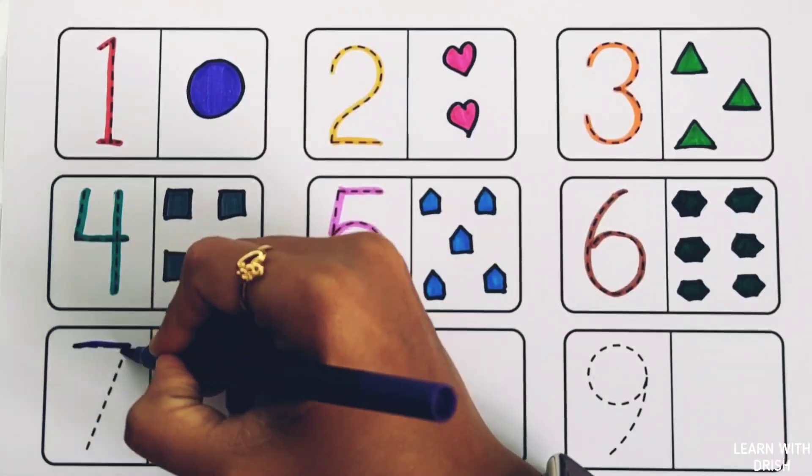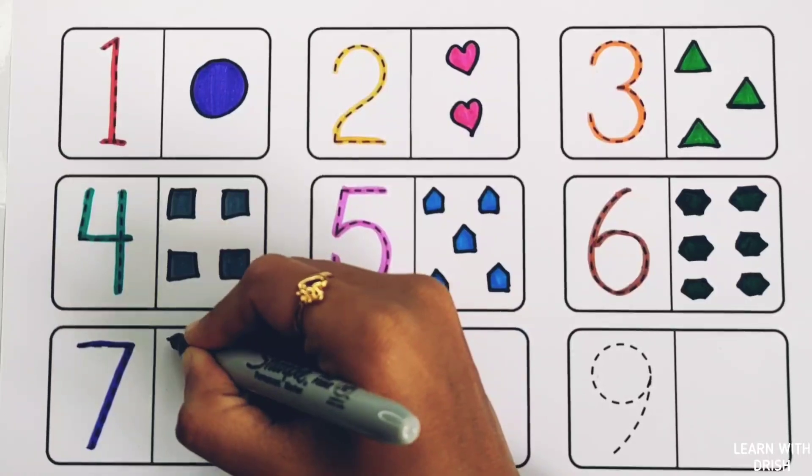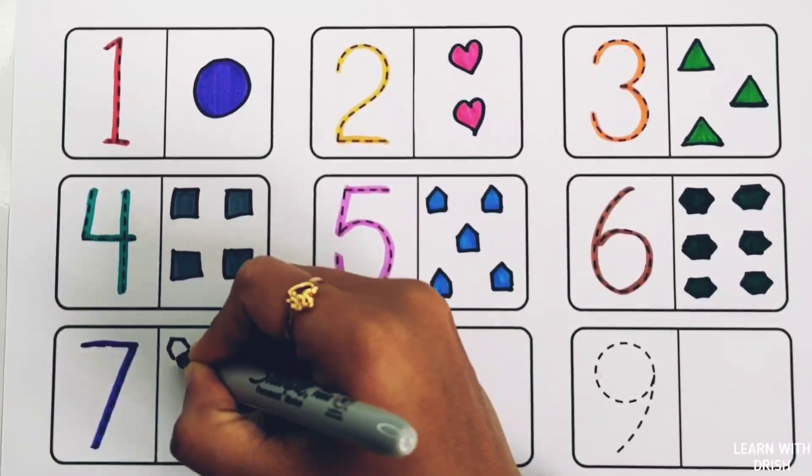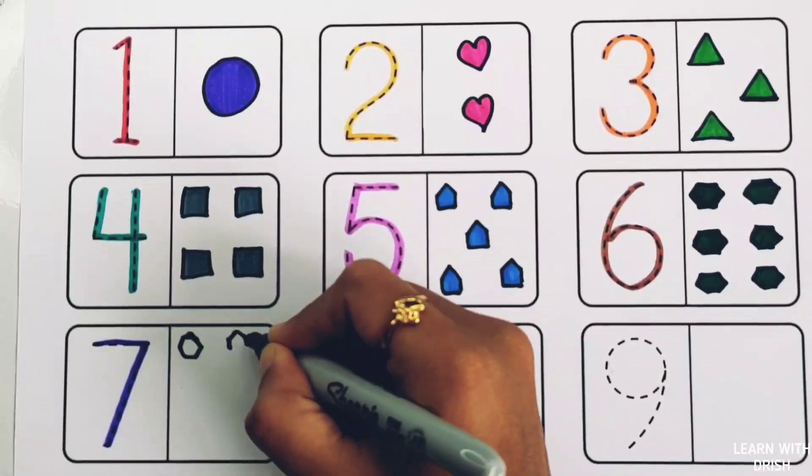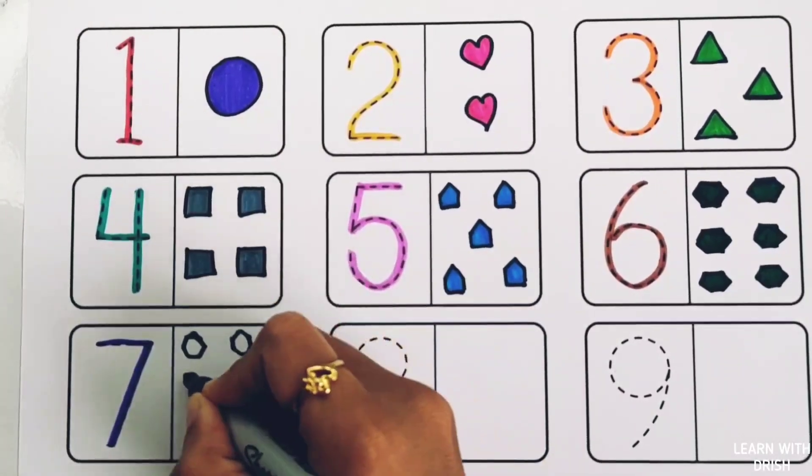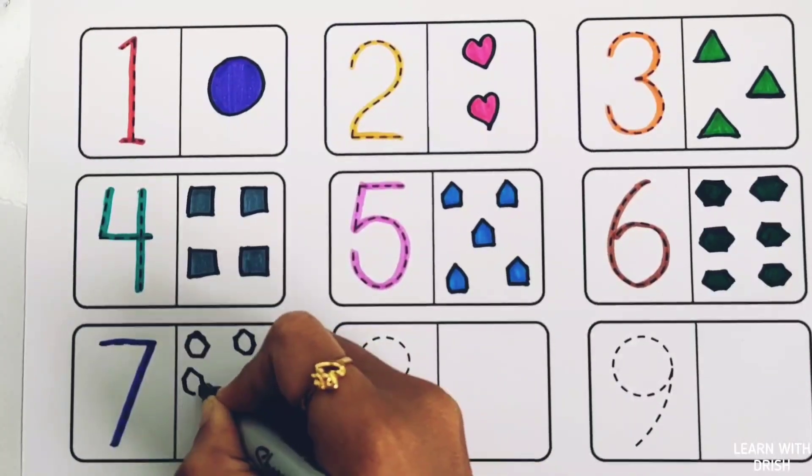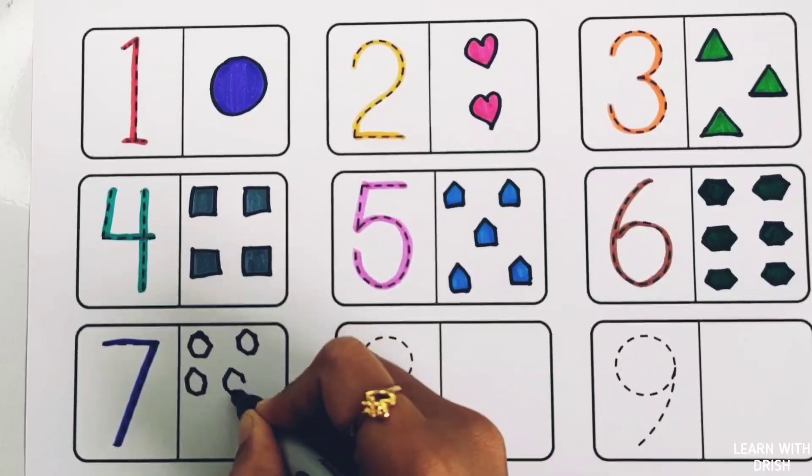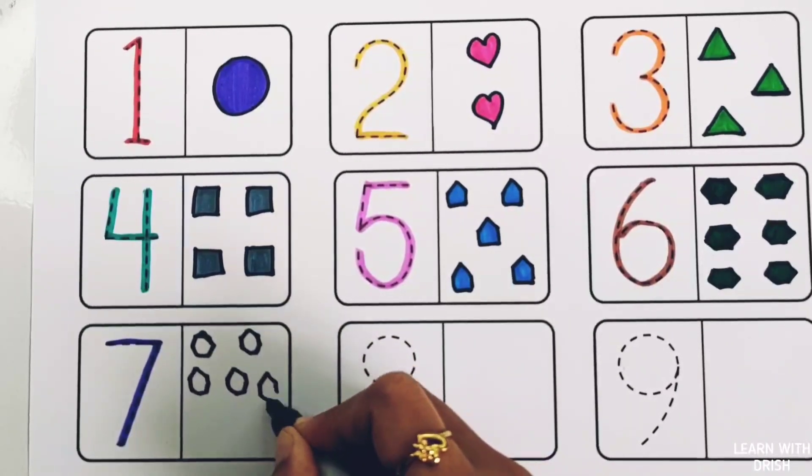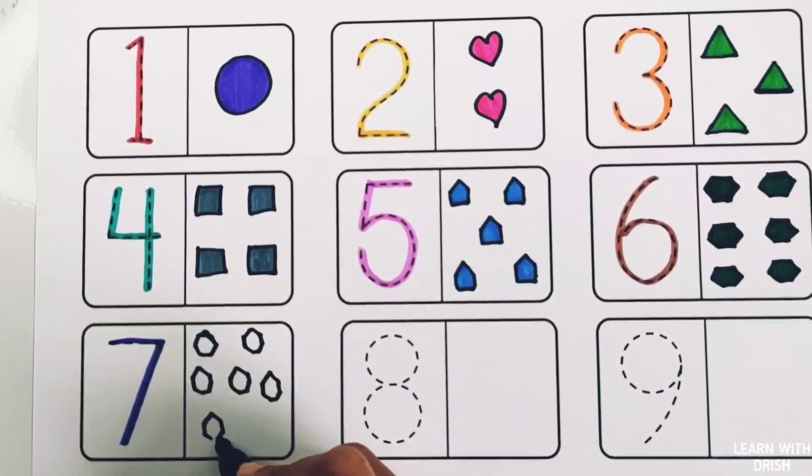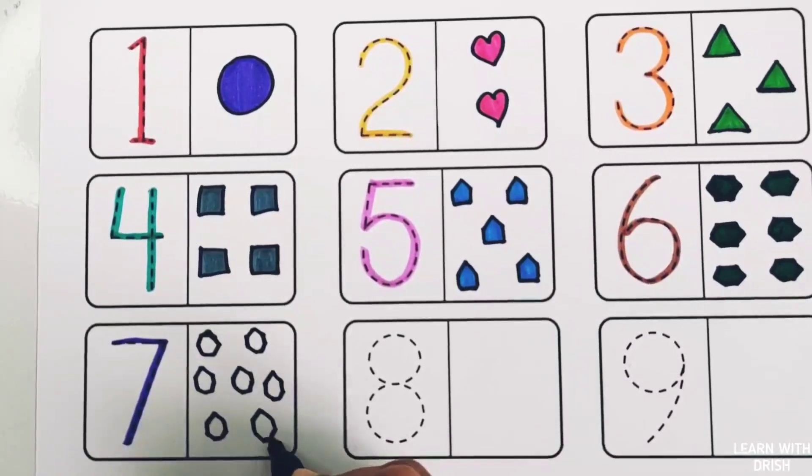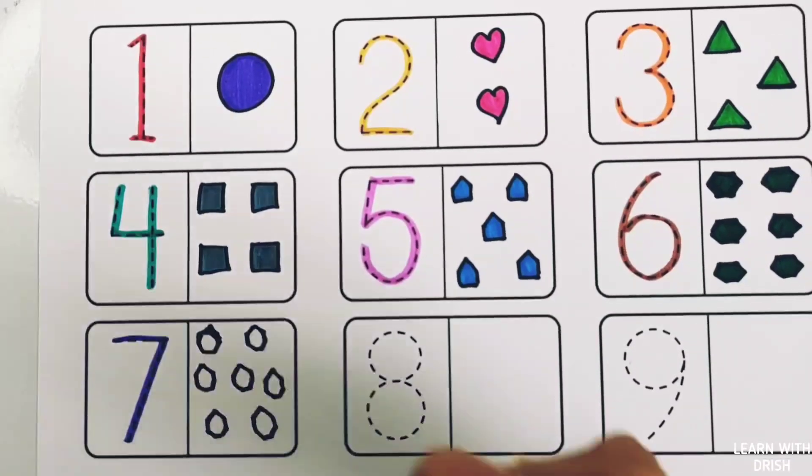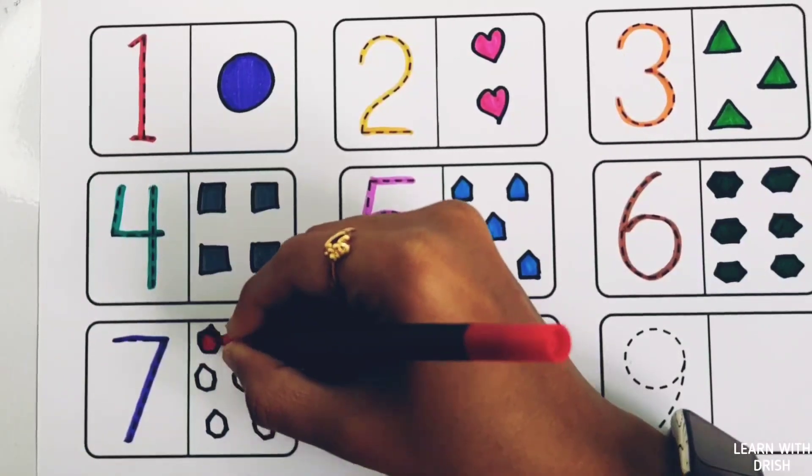Number seven. One, two, three, four, five, six, seven. Seven hexagons, red color.